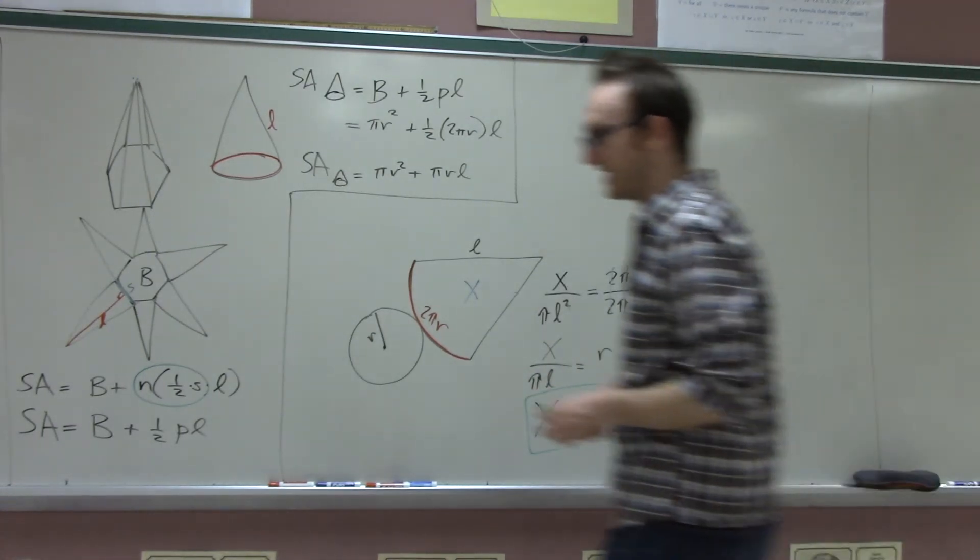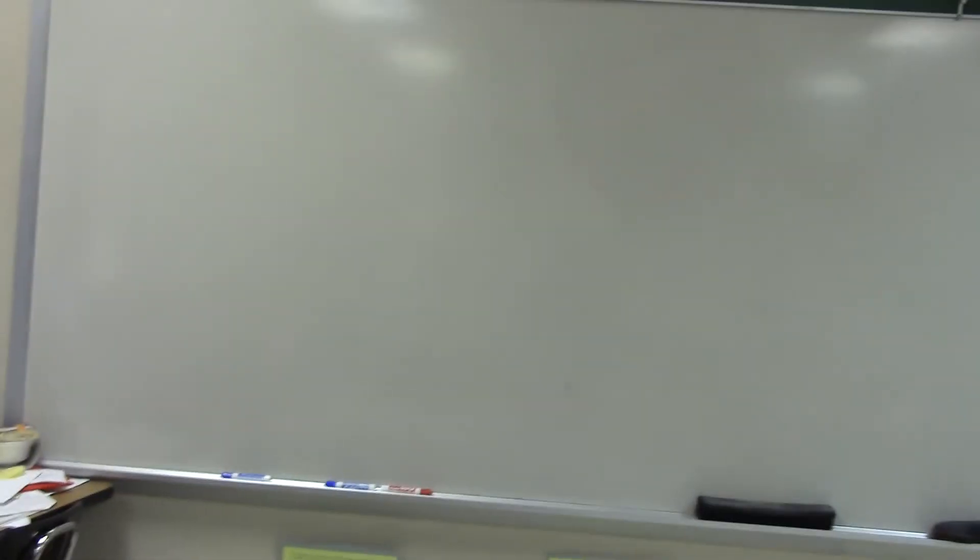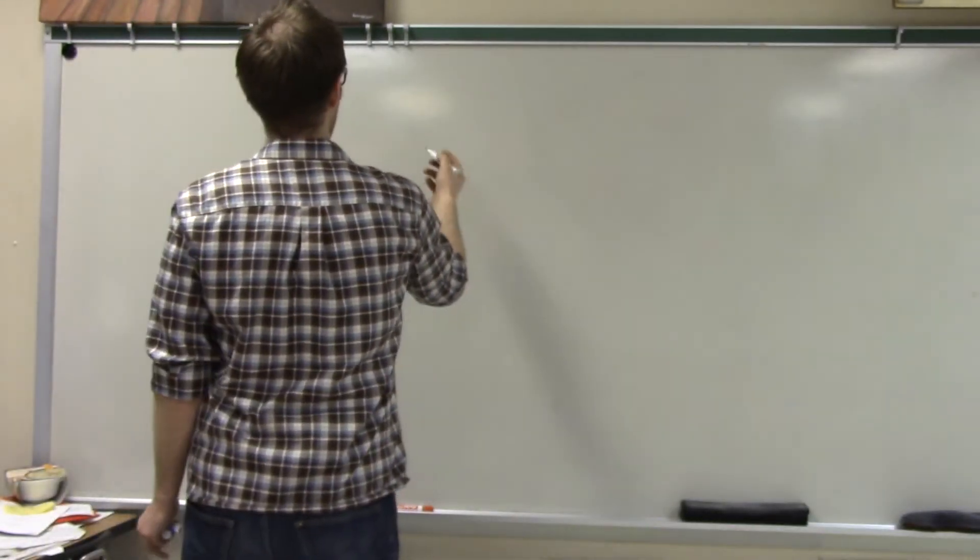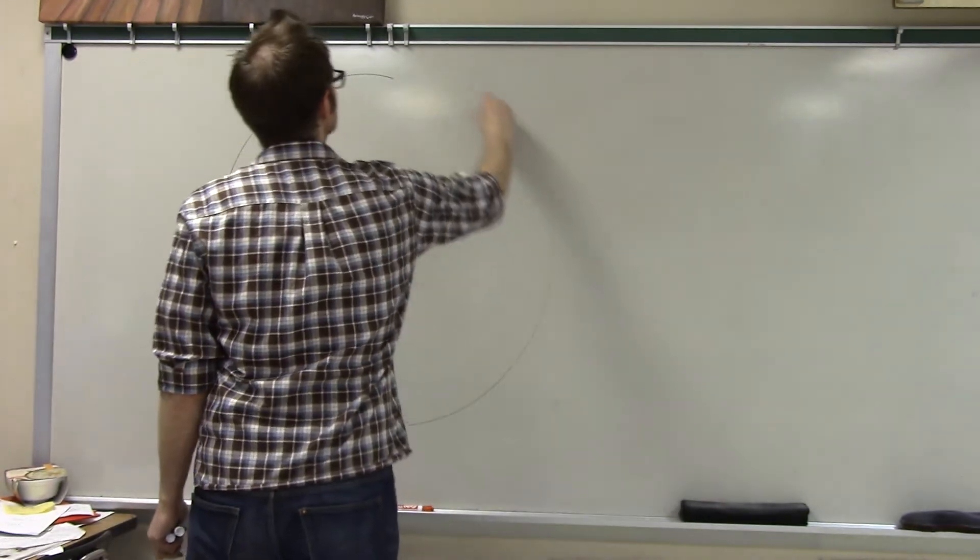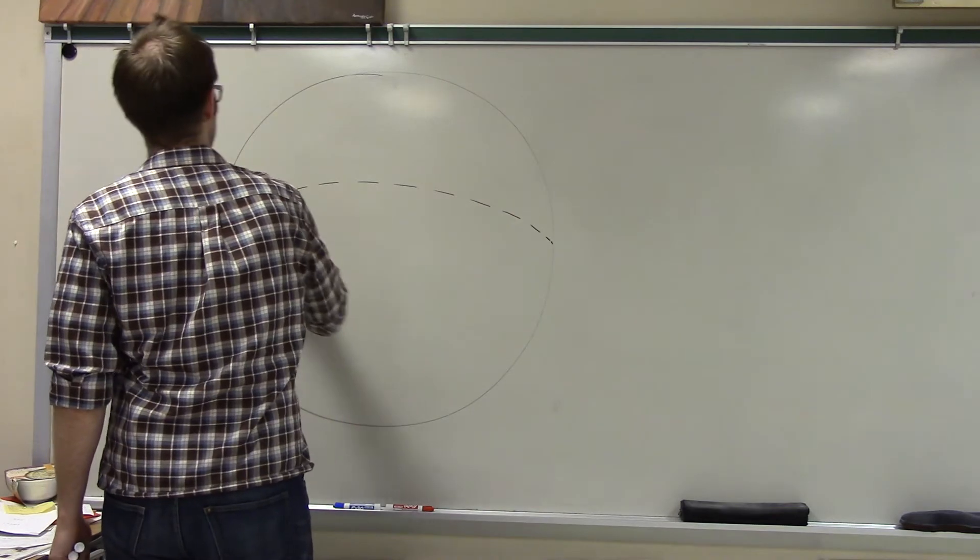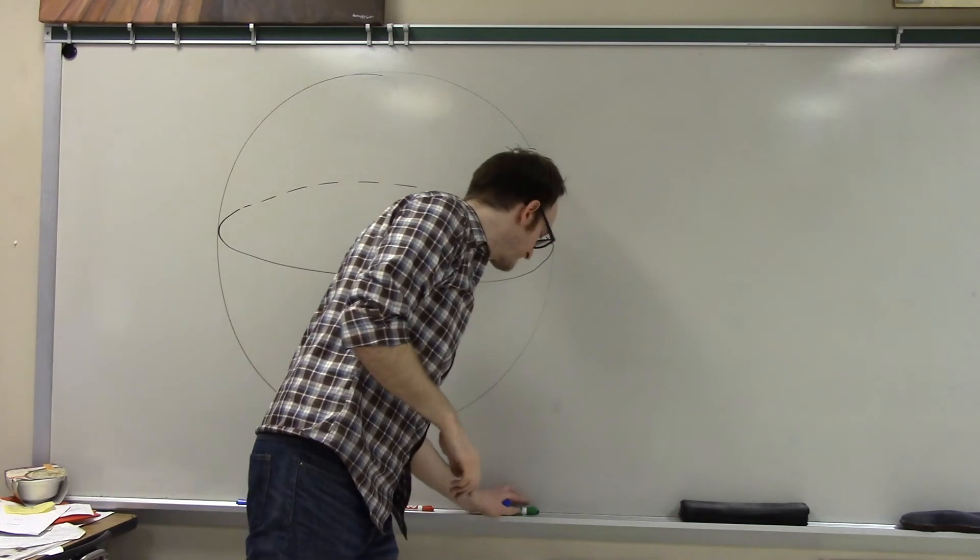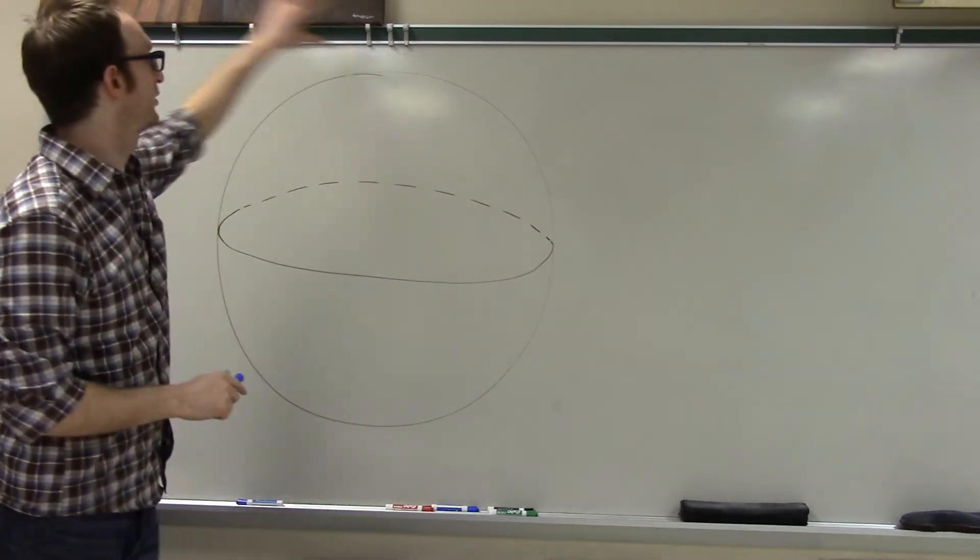Alright. That is everything except for one thing remains, and that is the surface area of a sphere. This is maybe the hardest one, and therefore also the coolest. Alright. How do you find the surface area of a sphere? Well, this is what we do. First I'm going to draw a giant sphere. And we kind of have this kind of situation.